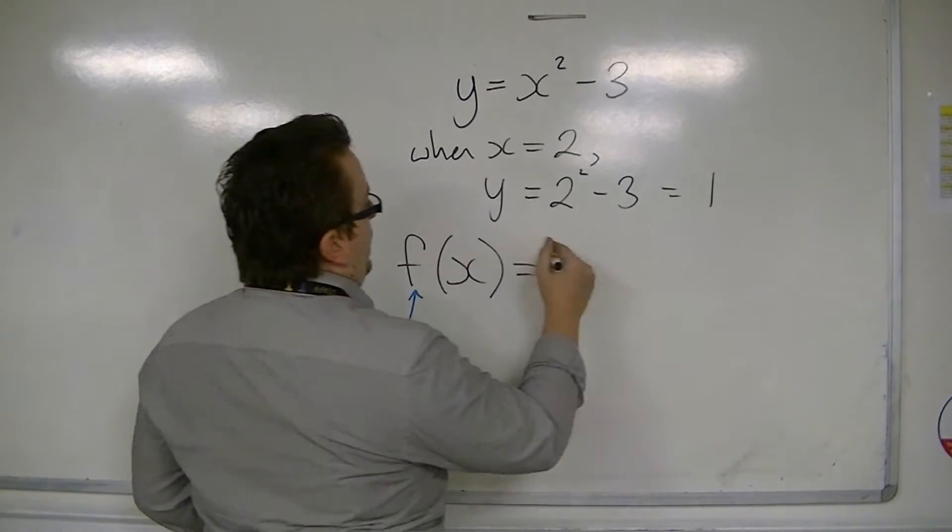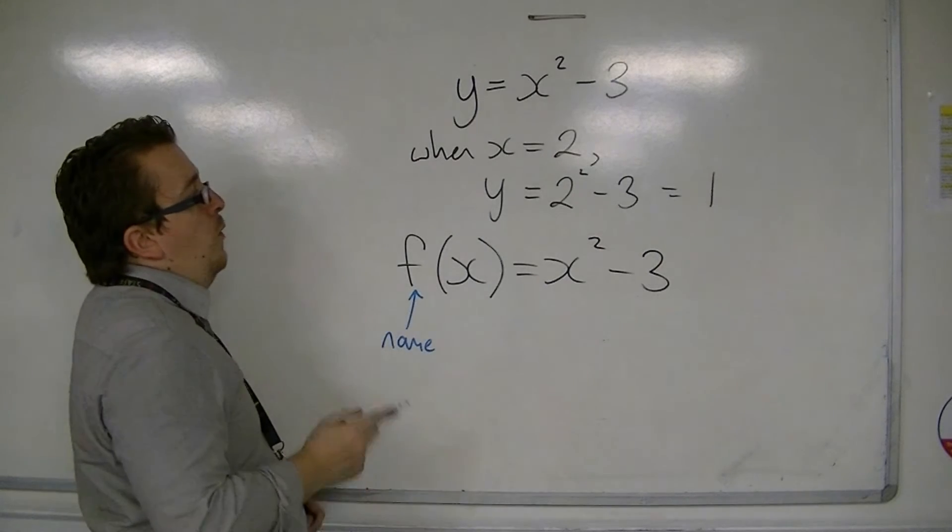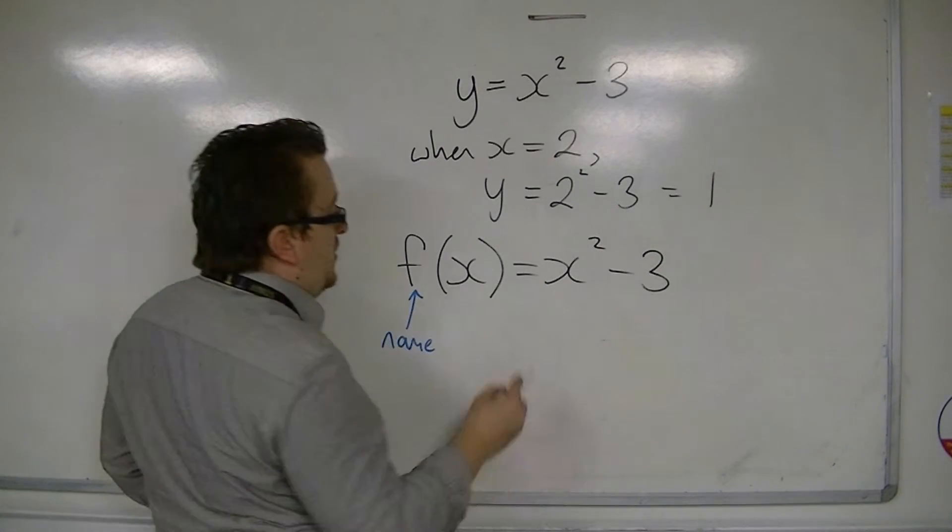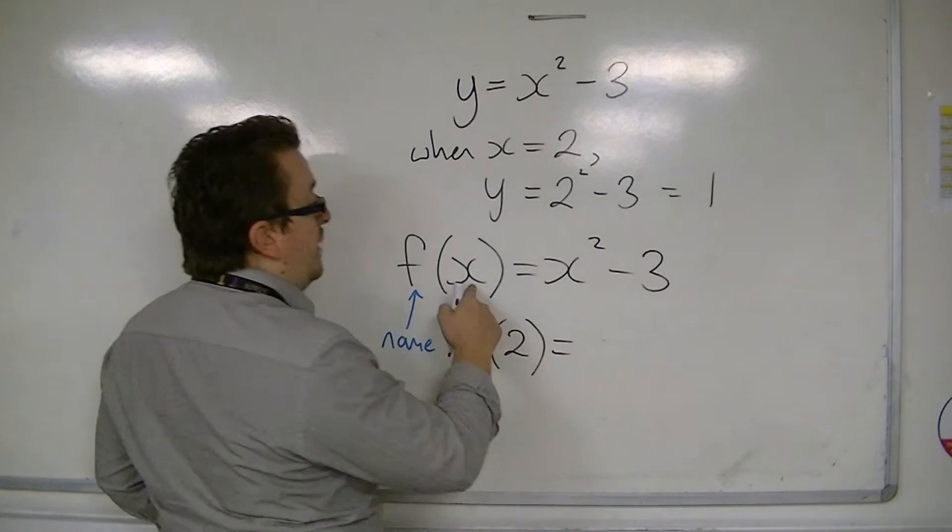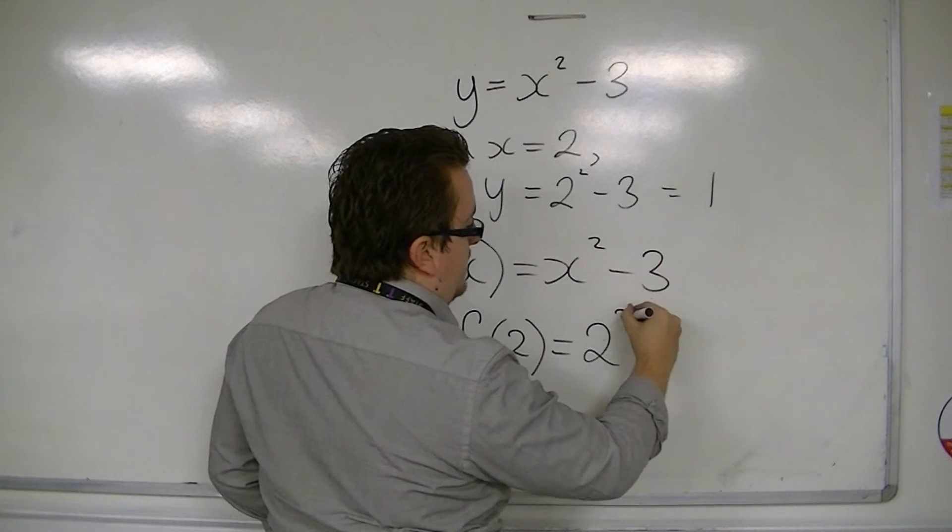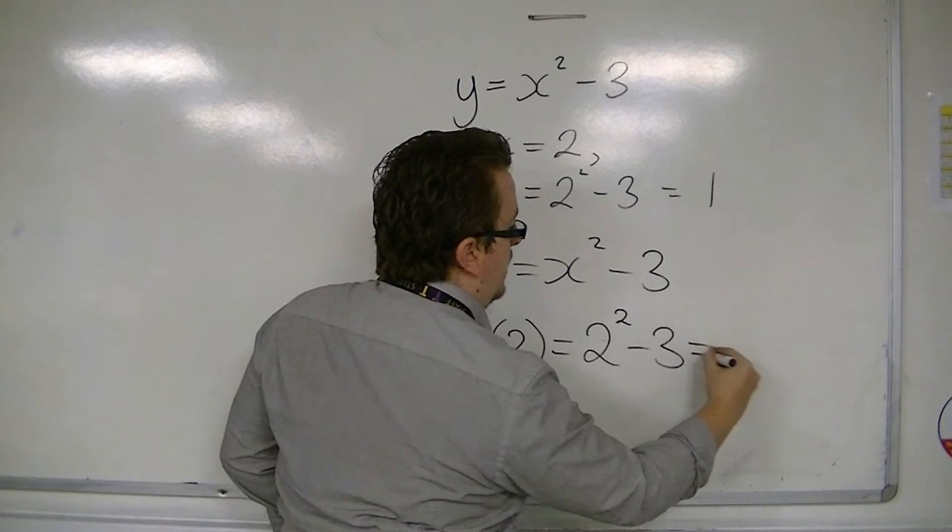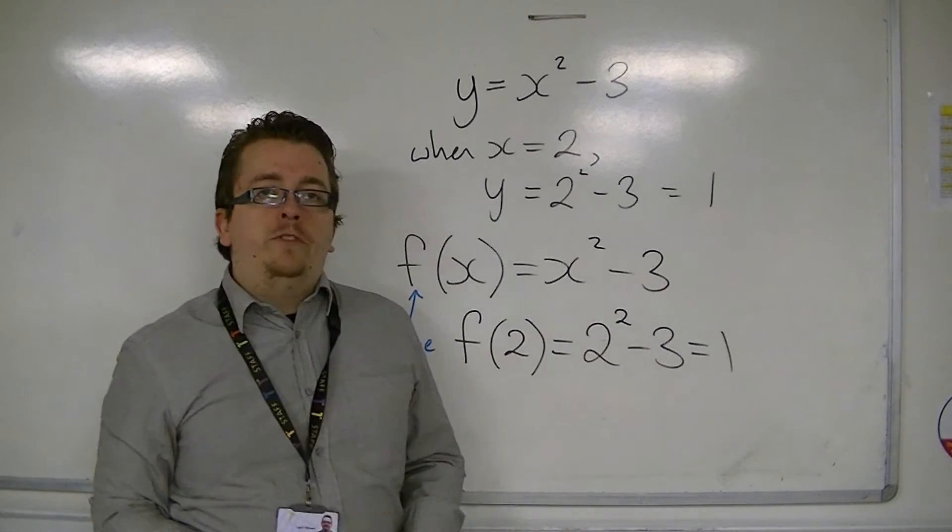If f of x is equal to x squared minus 3, then what we can do, if we want to look at when x is 2, we write f of 2. We've replaced the x with 2, so 2 squared minus 3, which is equal to 1. This is using function notation.